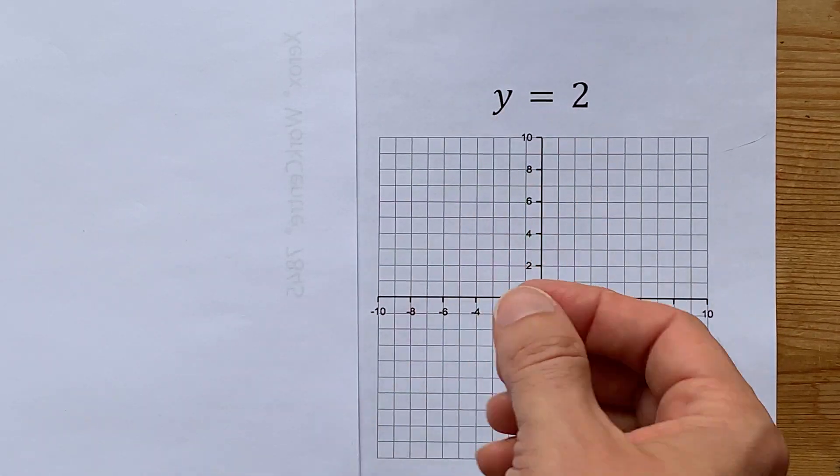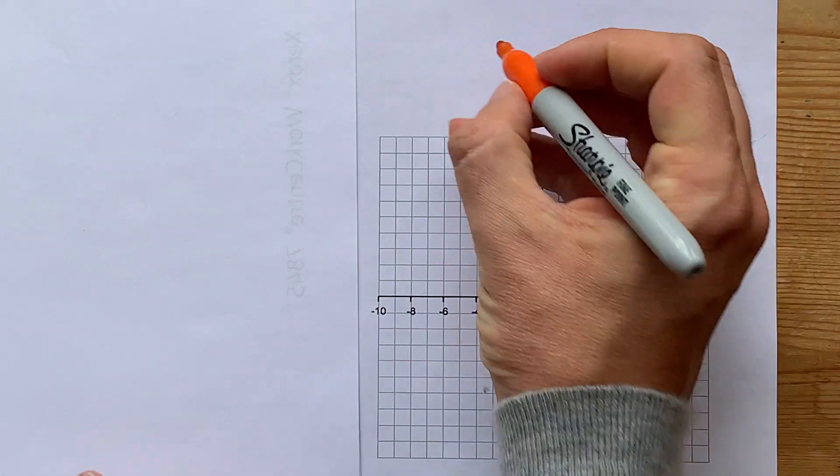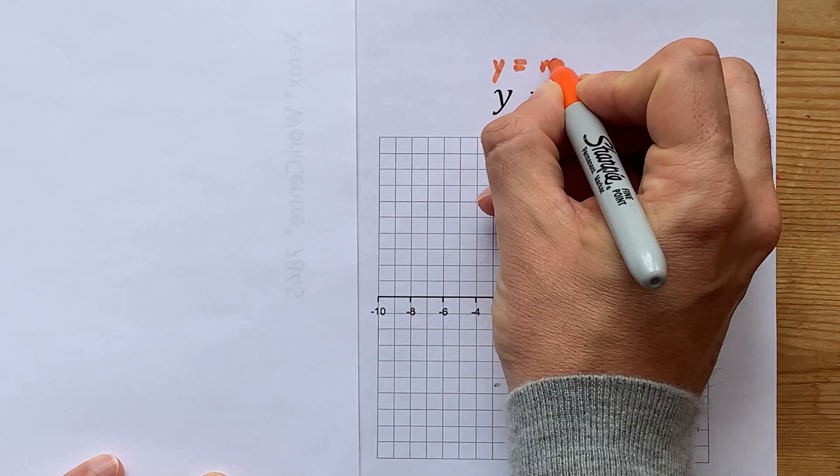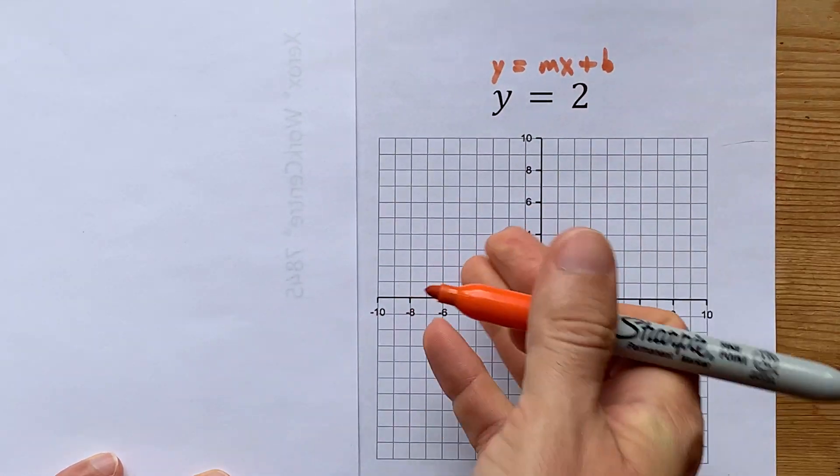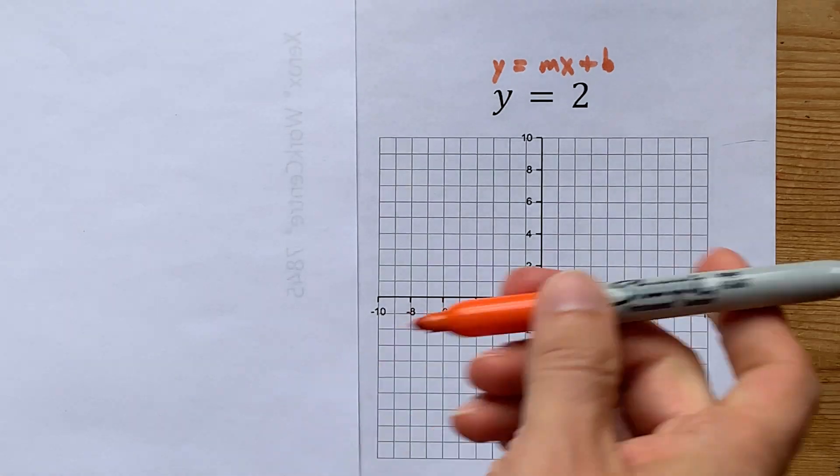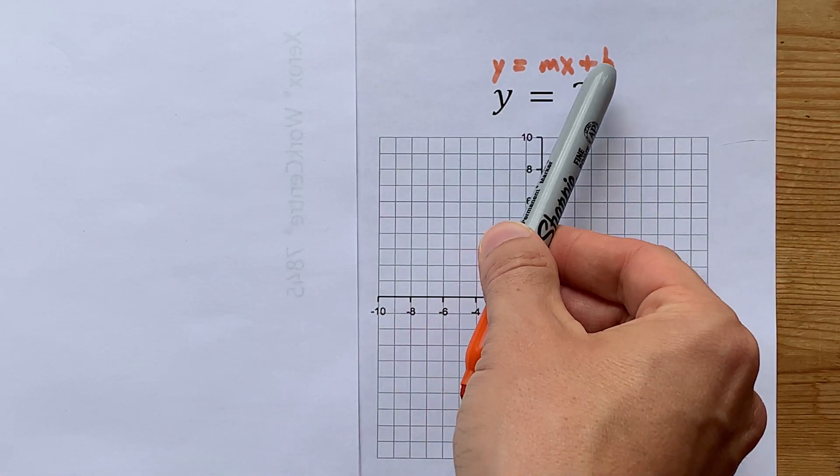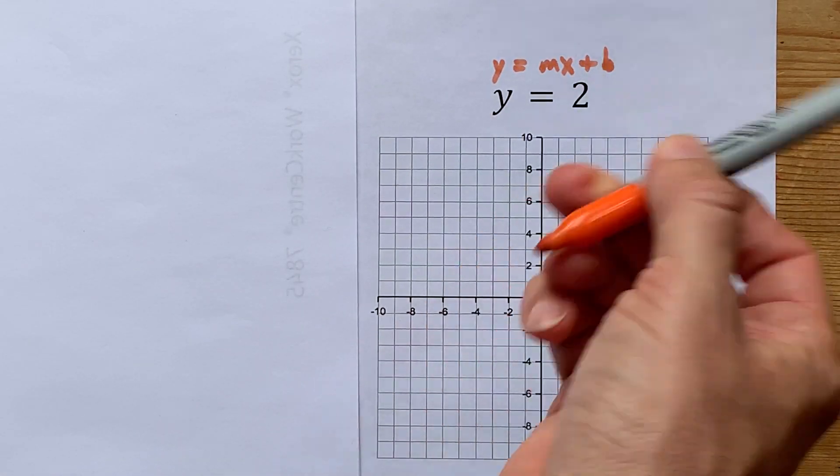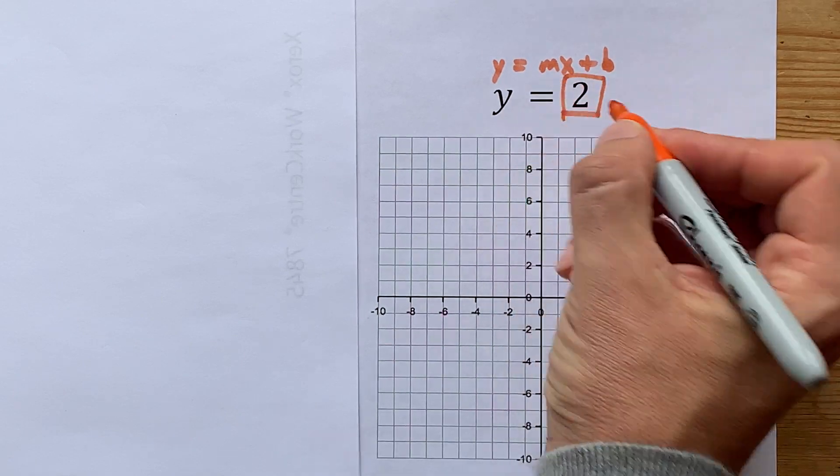The first way is to think about this as though it was y equals mx plus b. y equals mx plus b is the equation of a line, and you'll find the y-intercept b as the bare number, which actually for us is positive 2.